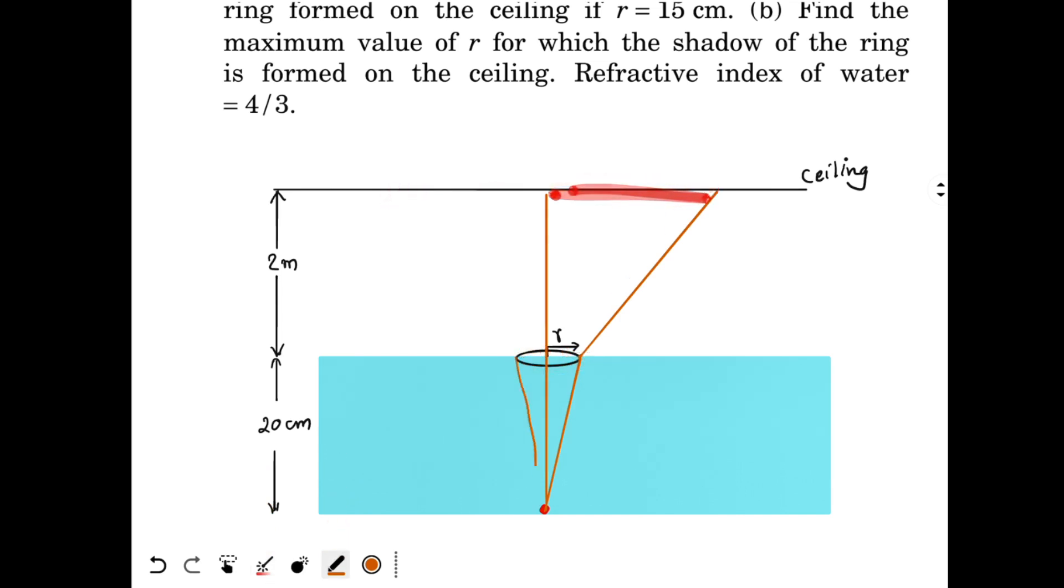And this is the radius of the shadow. Same thing is happening over here. Another ray let's draw over here. So this is the second ray. So the ring will create a shadow over here on the ceiling. And this will be the radius of the shadow. So we have to just find this radius. How do we do that?